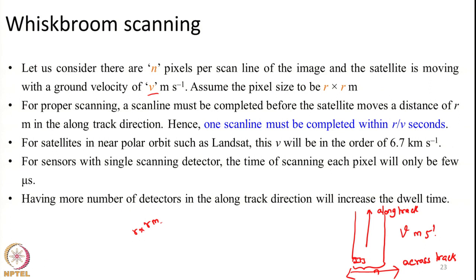Essentially what the scanner must do is: the satellite is constantly moving in the along-track direction, so each scanline must be completed before the satellite moves ahead a distance of r. Taking the example of Landsat 7 with a pixel size of 30 meters, the entire across-track scanline must be scanned completely before the satellite moves 30 meters.